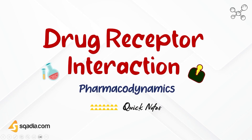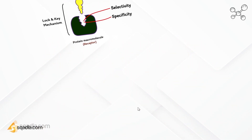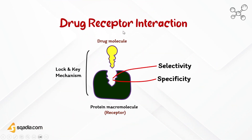So what is a receptor? A receptor is basically a protein macromolecule or binding site present on the surface or inside the cells that binds with a drug molecule and initiates a response in the cell. Such a protein macromolecule which binds with a specific drug molecule and initiates a response is called a receptor.